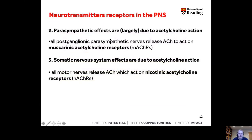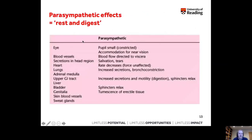Conversely, parasympathetic effects are largely due to acetylcholine action, with muscarinic receptors being the most important at the post-ganglionic fibers. For completeness, in the somatic nervous system acetylcholine acts on nicotinic receptors. Parasympathetic effects include decreasing heart rate, directing blood flow not to skeletal muscles but to the gut and viscera — important for digesting food and distributing energy — essentially directing blood flow to the viscera so we can digest food.